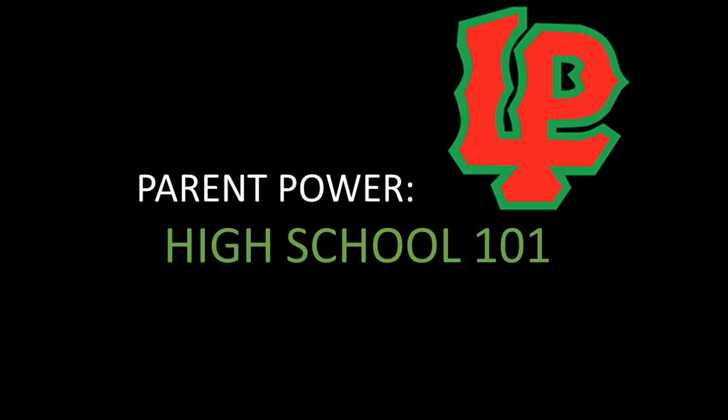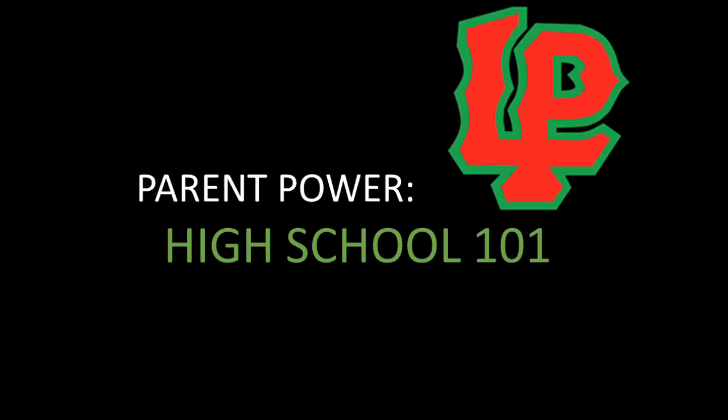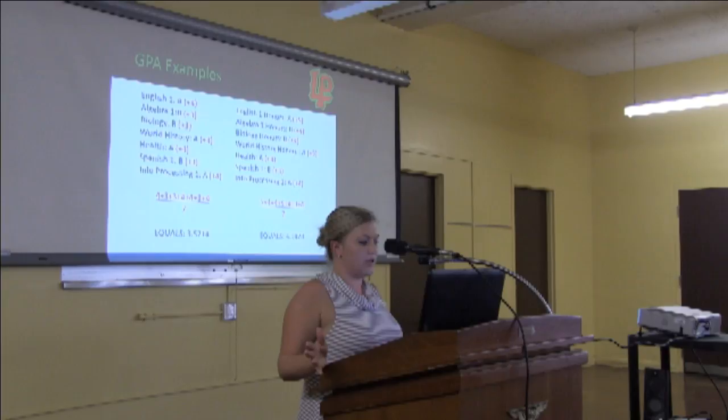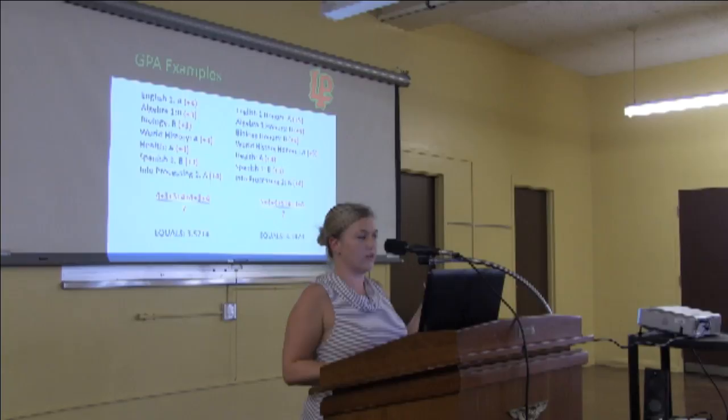How do you calculate GPA? You look at what their grade was — if they earned an A in their regular English 1 class, that's four points. English 1 Honors with an A is five points. You add everything up, then divide it by seven, and that gives you their GPA.